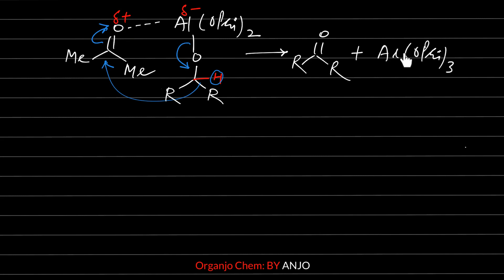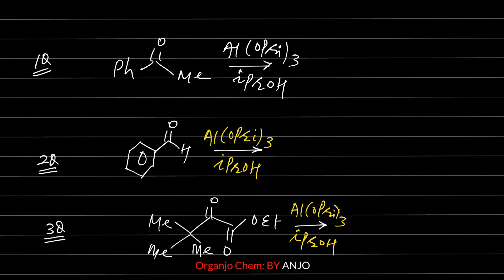Aluminum isopropoxide is also regenerated, and this reaction is called Oppenauer Oxidation. I hope in this video lecture you have understood MPV Reduction and its reverse reaction, Oppenauer Oxidation, very well. In the rest part of the video, six practice questions are provided for you, displayed three at a time on your screen. You should pause and slow down the video, solve the six questions, and then match your answers.